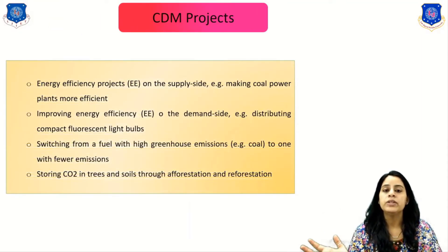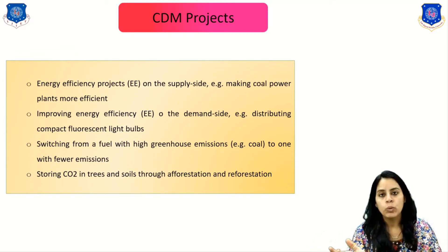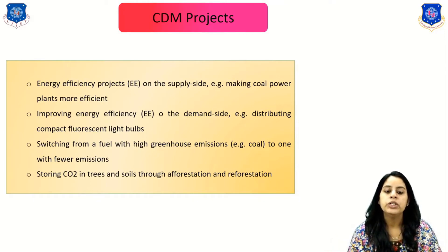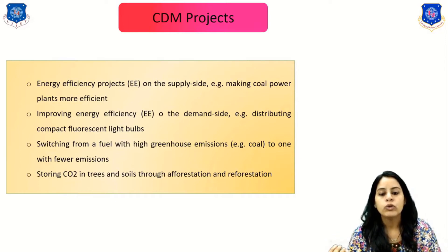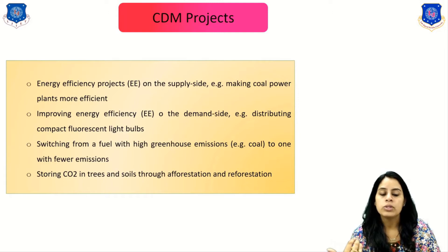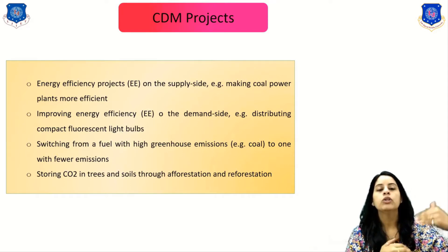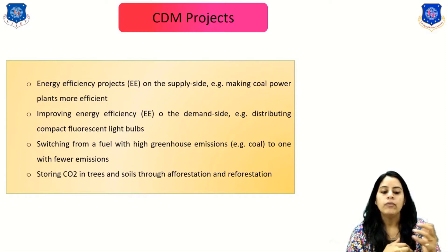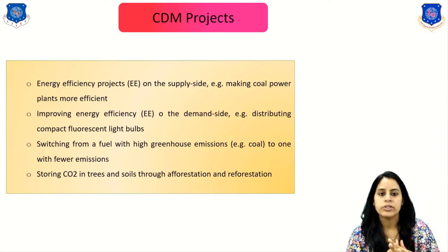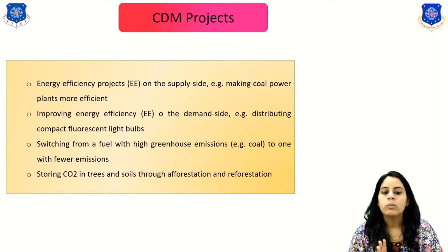Other CDM project types include energy efficiency projects on the supply side, such as making coal power plants more efficient, and improving energy efficiency on the demand side, such as distributing compact fluorescent light bulbs. Additional types include switching from fuels with high greenhouse emissions, such as coal, to ones with fewer emissions, and storing carbon dioxide in trees and soil through afforestation and reforestation. These are all the CDM project types.